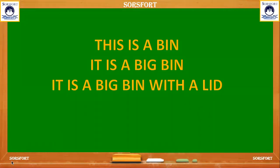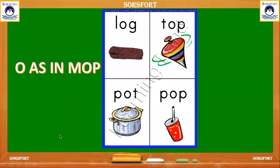Next comes O. O as in mop: M, O, P — mop. O is in between M and P. L, O, G — log. T, O, P — top. P, O, T — pot. P, O, P — pop. Now we can read the letter word with O: P, O, P — pop.